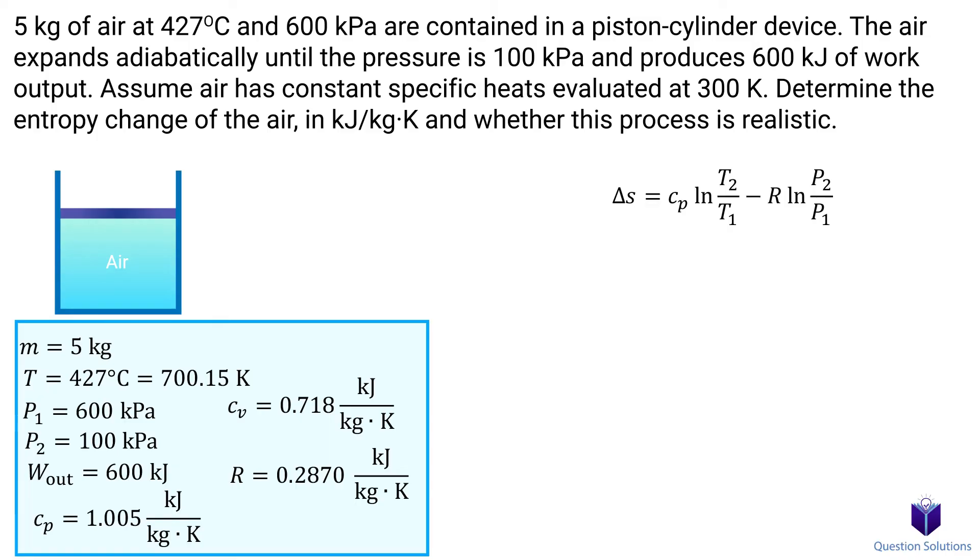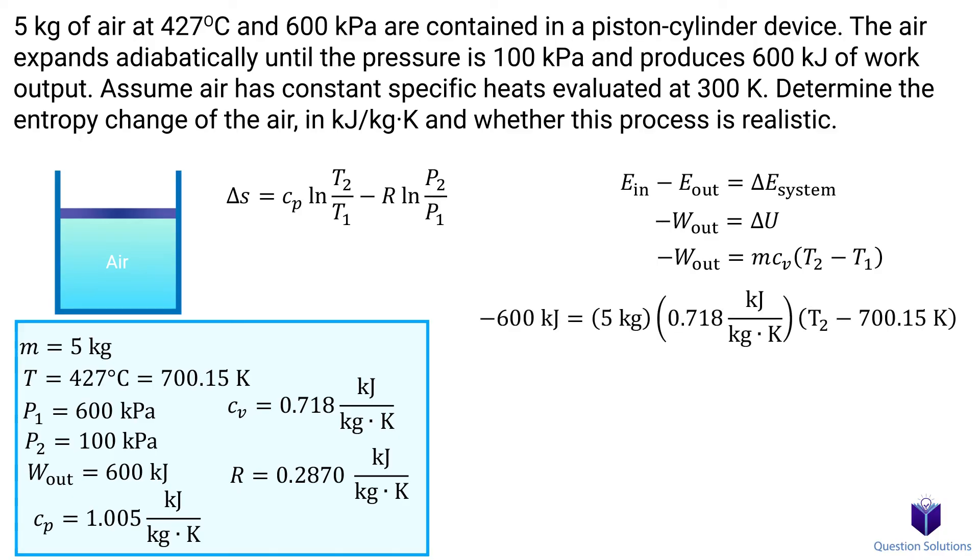To do that, let's write an energy balance equation for our cylinder. Energy in minus energy out gives us the change in energy of the system. We have no energy going in, but we do have energy going out. That's equal to the change in internal energy of the system. We can find internal energy using this equation, so now our equation looks like this. If you need to refresh, please see the video about internal energy.